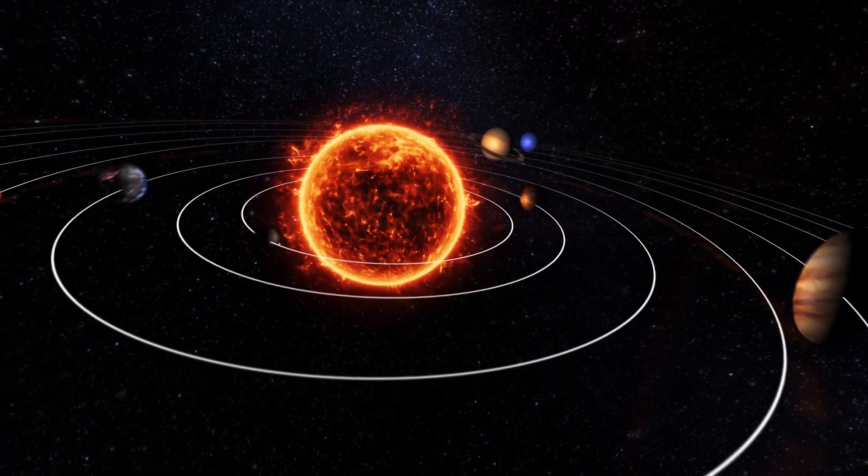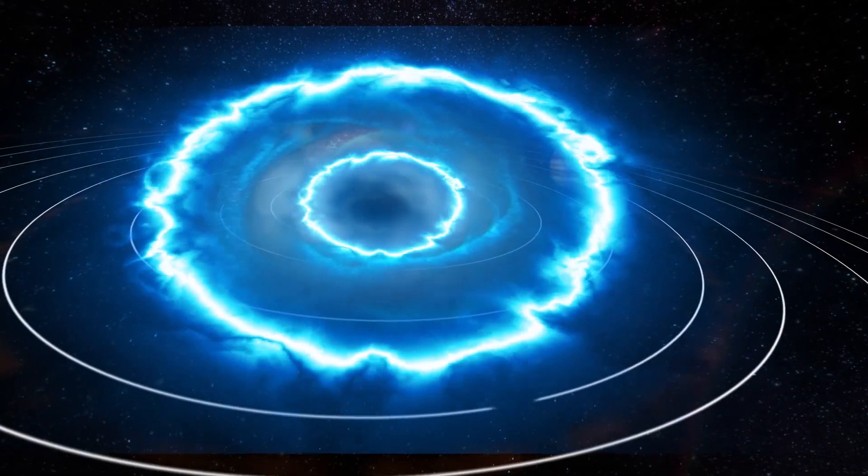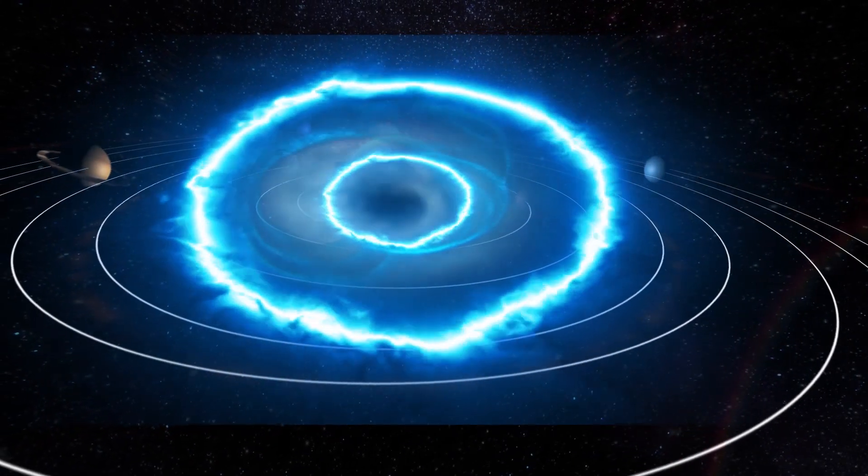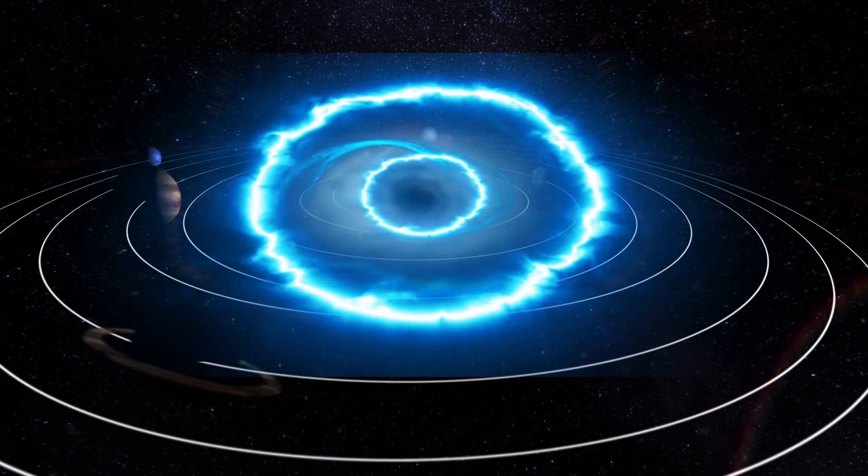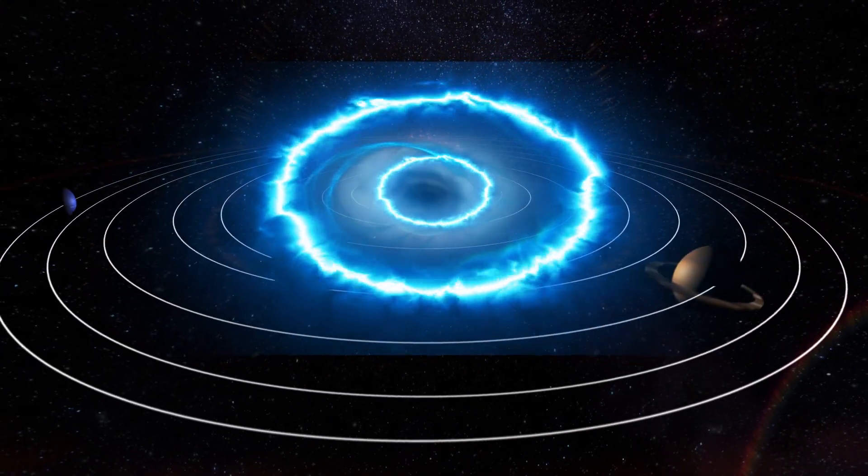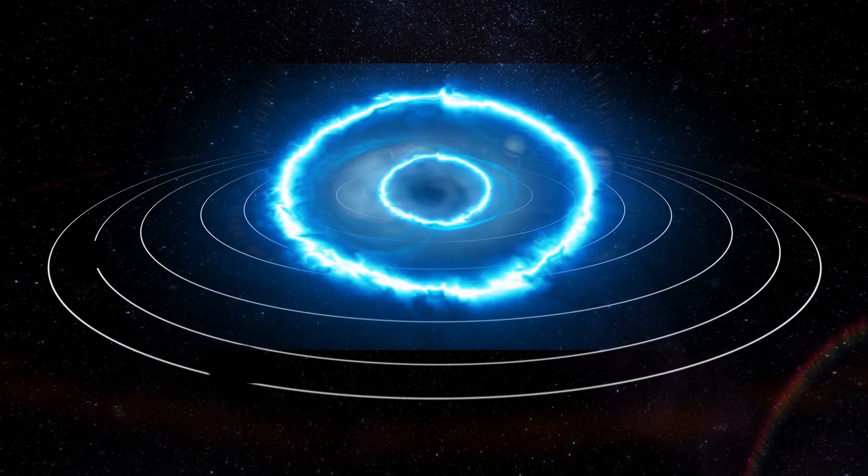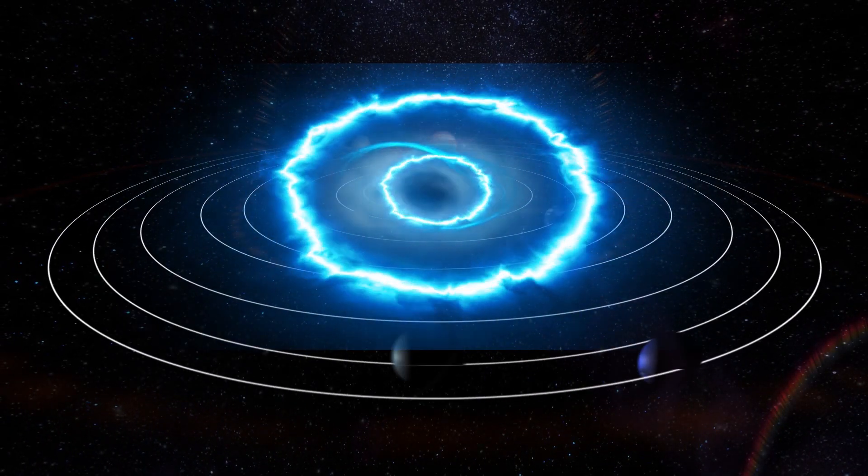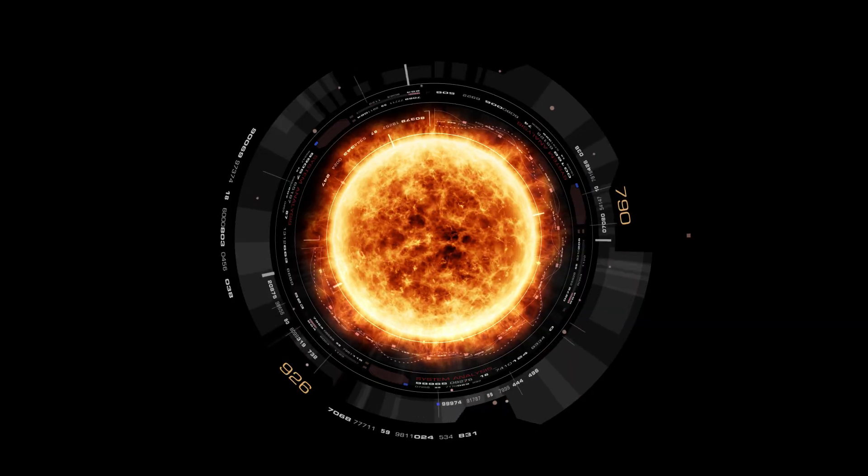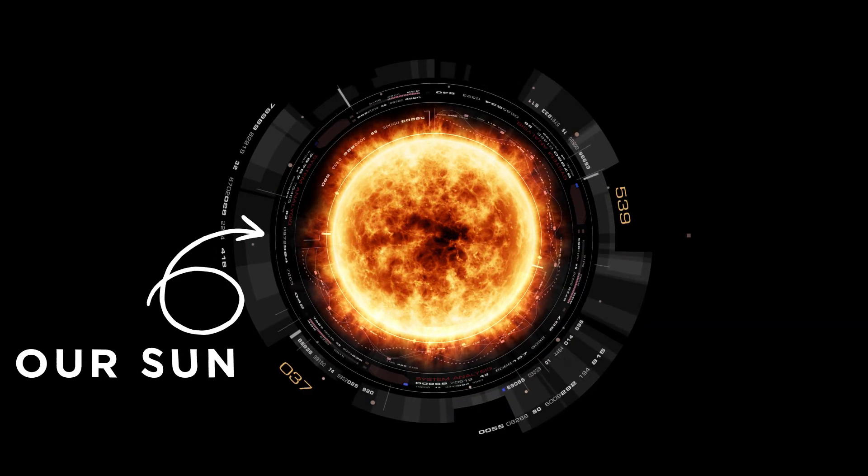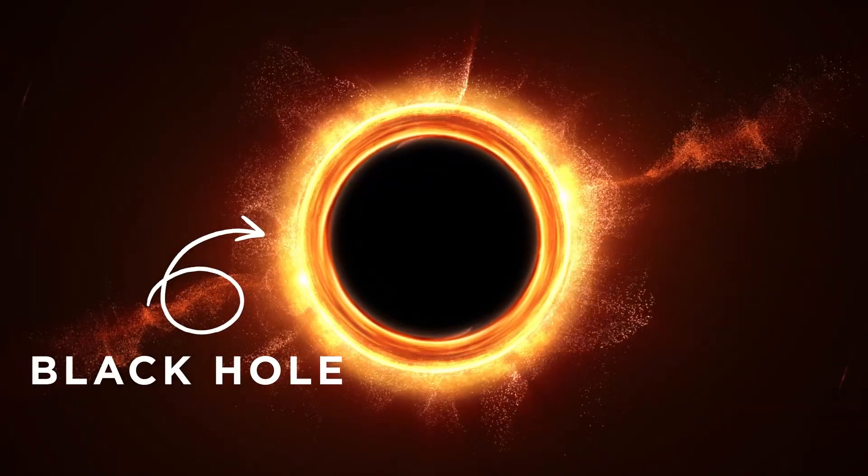NASA also made it clear that even if a black hole eats our very own sun, our planets will not be pulled into it because a black hole has the same gravitational force as our sun. And in the end, our planets would simply revolve around the black hole like they surround the sun today. But the black hole cannot ever eat the sun because our sun is not big enough to become a black hole.